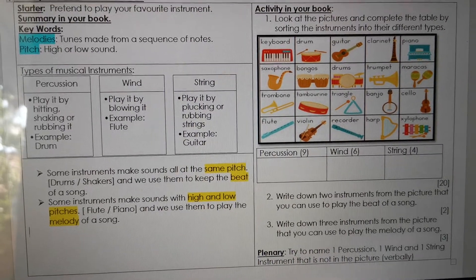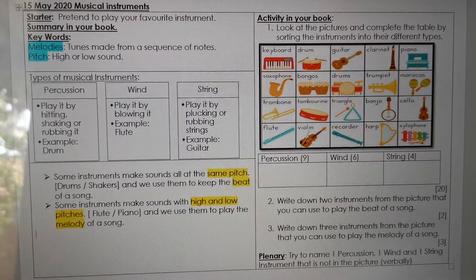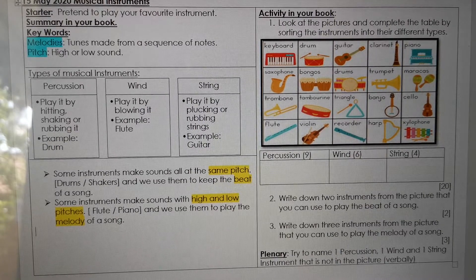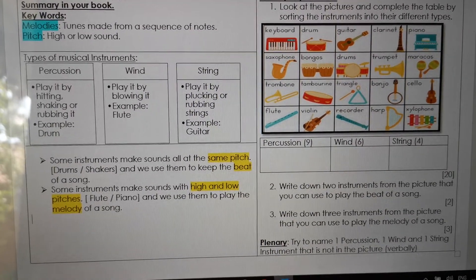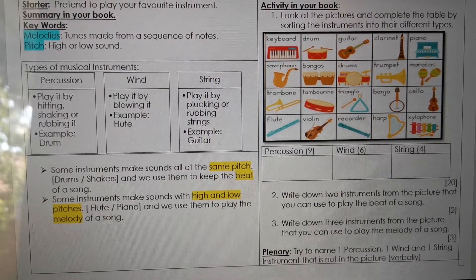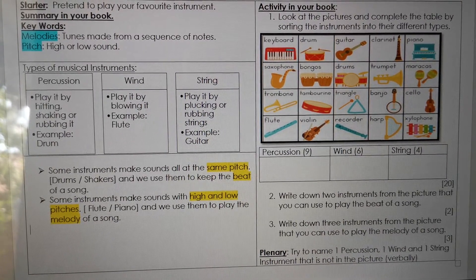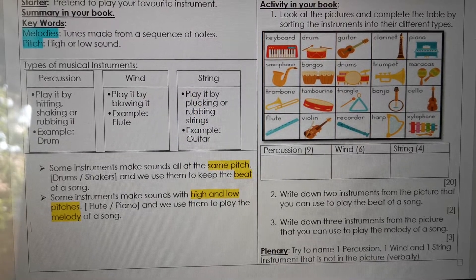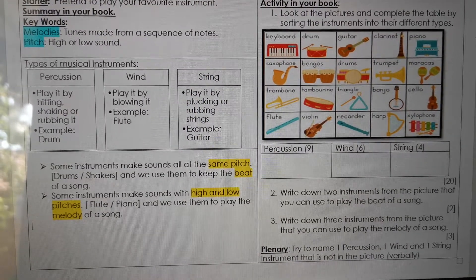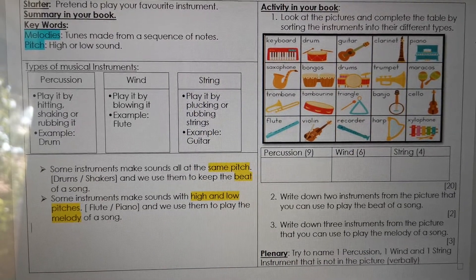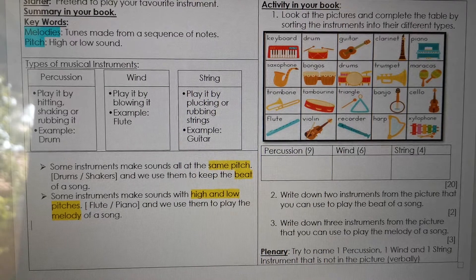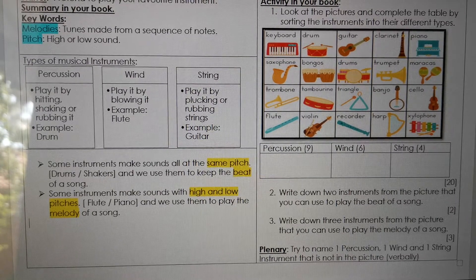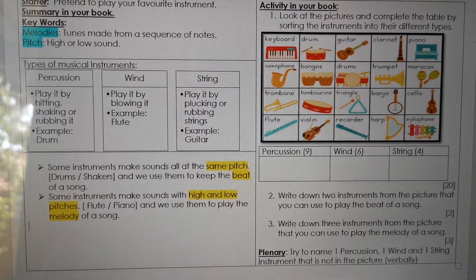Now we're going to move to the goal for today. We're going to learn about musical instruments — what they are used for and how do you play them. We're going to look at the three different types of musical instruments. First, we have percussion — an instrument that you play by hitting it, shaking it, or rubbing it, and an example is the drum. Then we have wind instruments, which you play by blowing, and an example is the flute. And then we have string instruments, which you play by plucking or rubbing the strings.